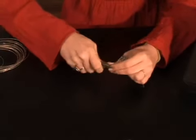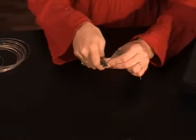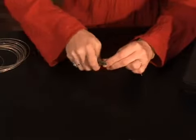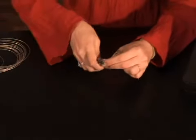The smaller you make that initial loop, the easier it's going to be to swirl around.